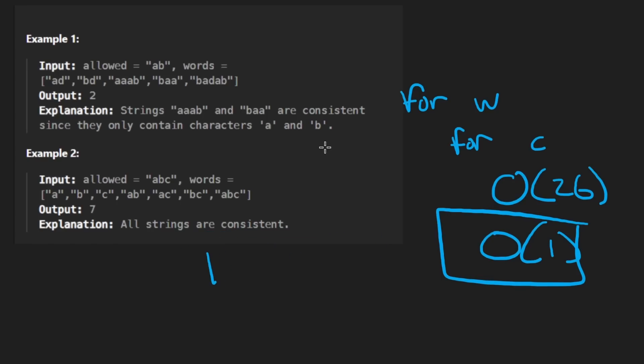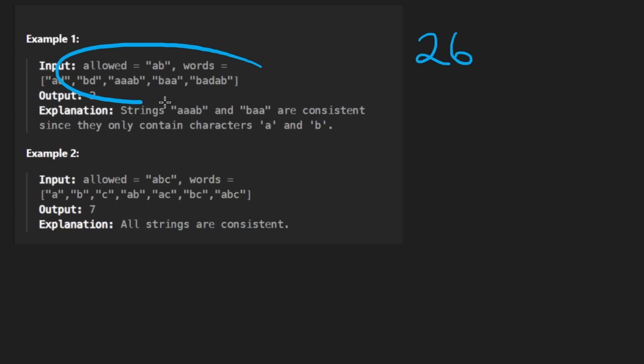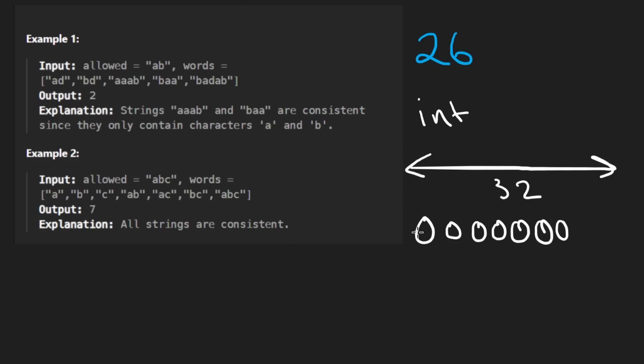Given that the constraints are so small that we're only dealing with 26 characters like that's our character set, we could actually use a single 32 bit integer. Now in Python, it doesn't really matter. But most languages have 32 bit integers. The reason for that is because it will have 32 bits set, and each of them will be a zero, not each of them will be a zero. But like imagine we have 32 bits, right? Each of the bits can correspond to a character. So since we have 26 characters, that's enough, we'll have six bits left over, we won't use those.